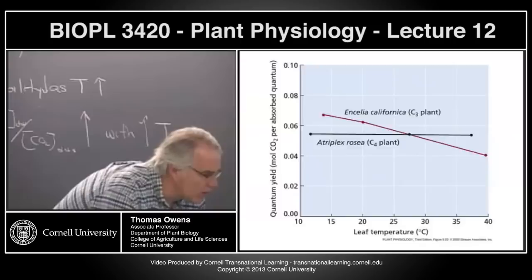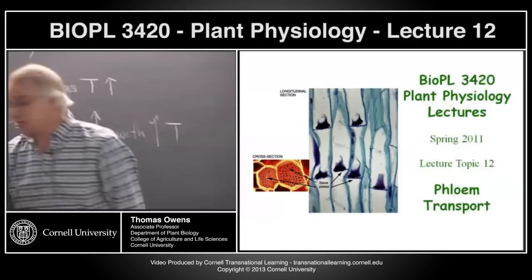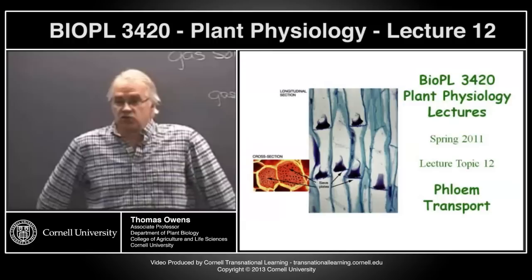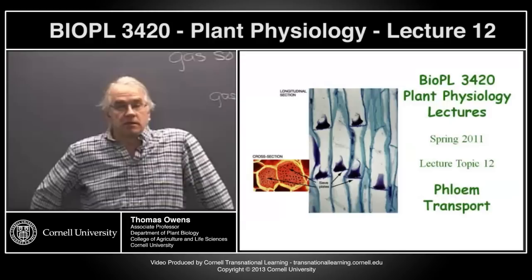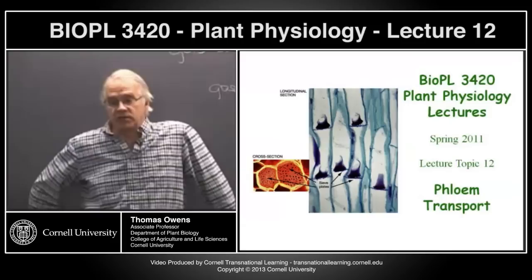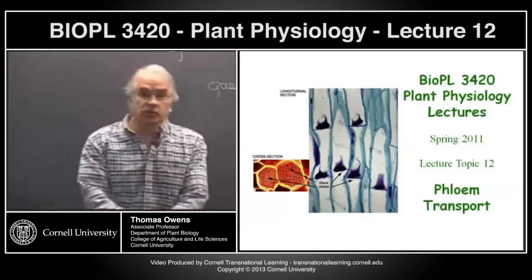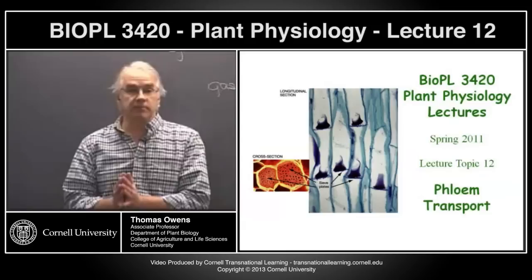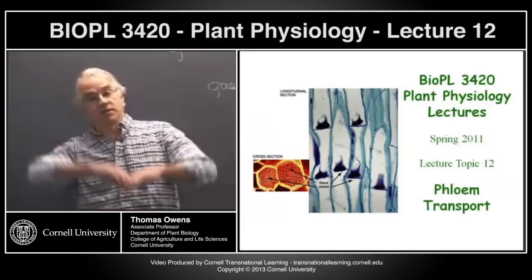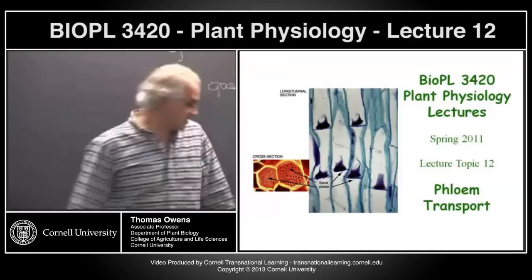What we're going to start talking about now is something we've mentioned several times but haven't gotten into detail: the products of photosynthesis — the triose phosphate and the sucrose made in the leaves — must be distributed throughout the plant to all the non-photosynthetic parts. The roots need lots of energy for active transport, and that energy is ultimately dependent upon sugars produced by photosynthesis.